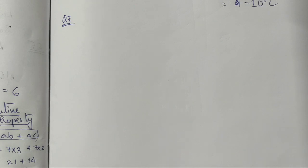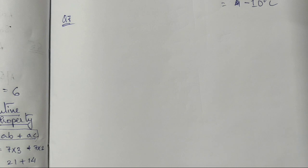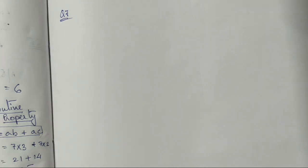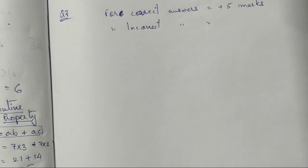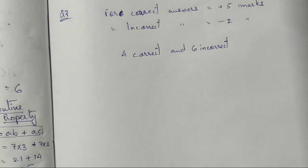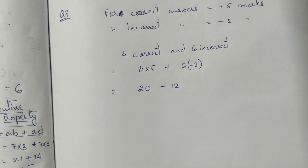Question 7 involves a 10-question test where 5 marks are awarded for a correct answer and -2 for an incorrect answer. Mohan gets 4 correct and 6 incorrect answers. We multiply: 4 × 5 = 20 for correct answers and 6 × (-2) = -12 for incorrect answers. Adding both gives Mohan's total score.